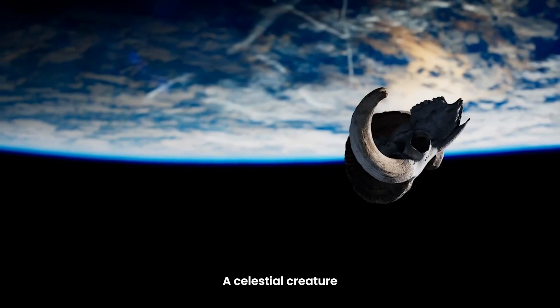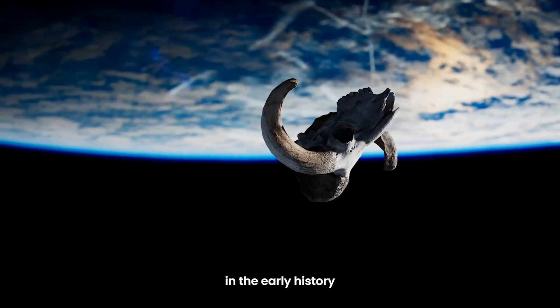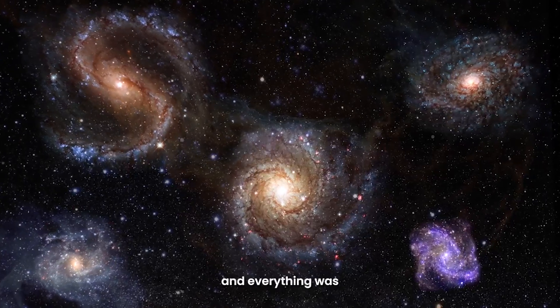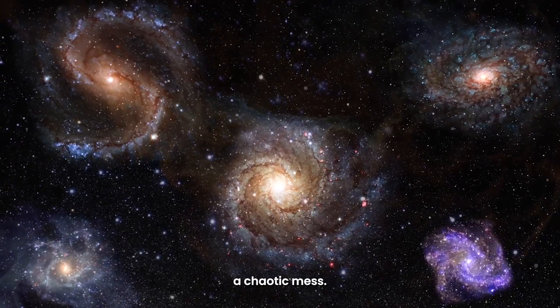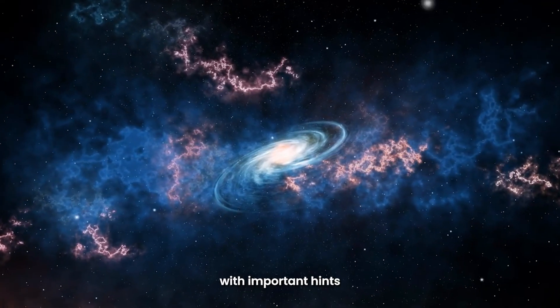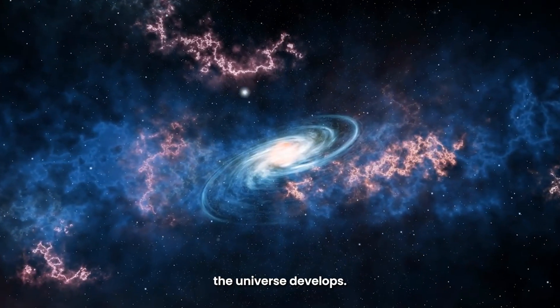A celestial creature is a really interesting object that appears in the early history of the universe when galaxies were just beginning to form and everything was a chaotic mess. It's like a cosmic pioneer that has existed from the beginning, providing us with important hints about how the universe develops.